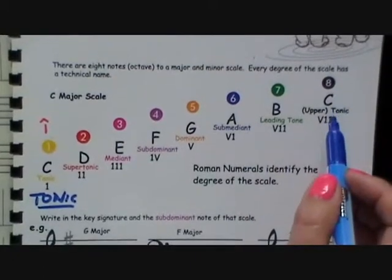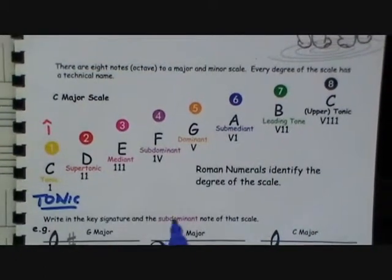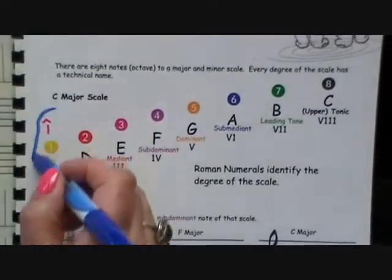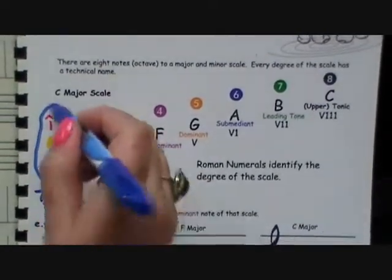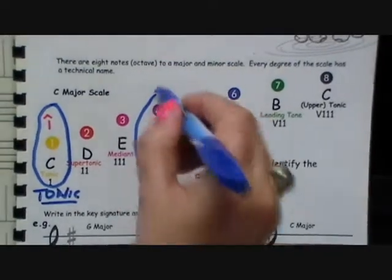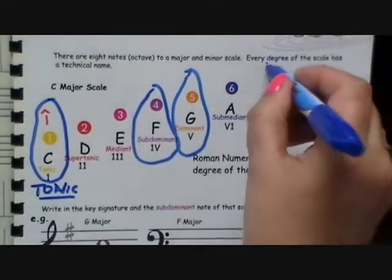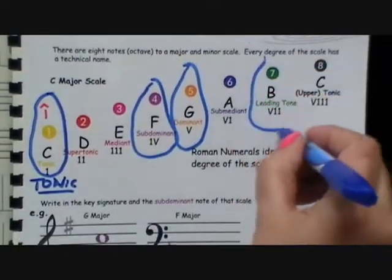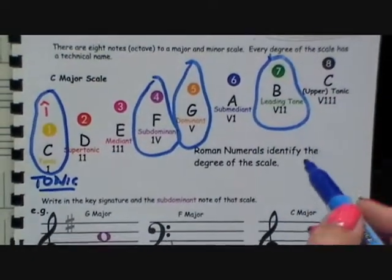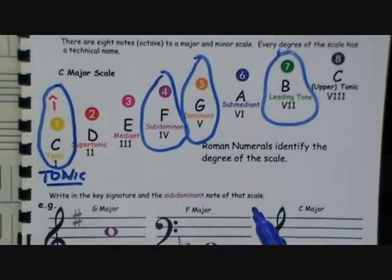And of course we have our upper tonic. For the basic theory exam, they will have you focus on the tonic, the subdominant, the dominant, and I'm going to include the leading tone, because we always talk about the leading tone in a minor scale — it's the tone that gets raised.